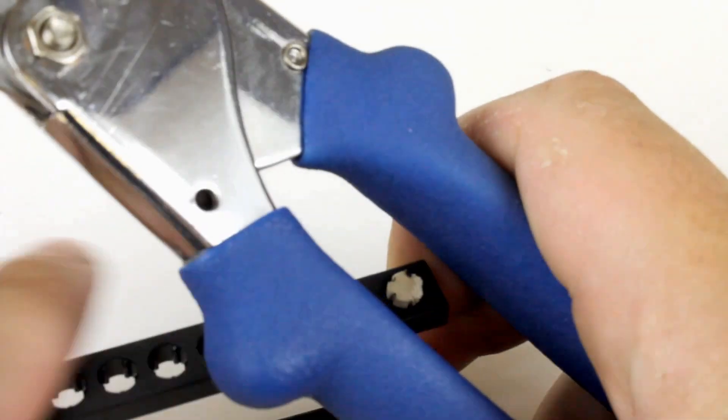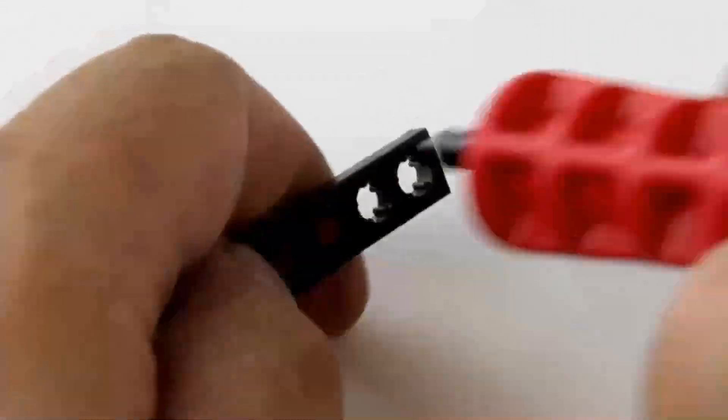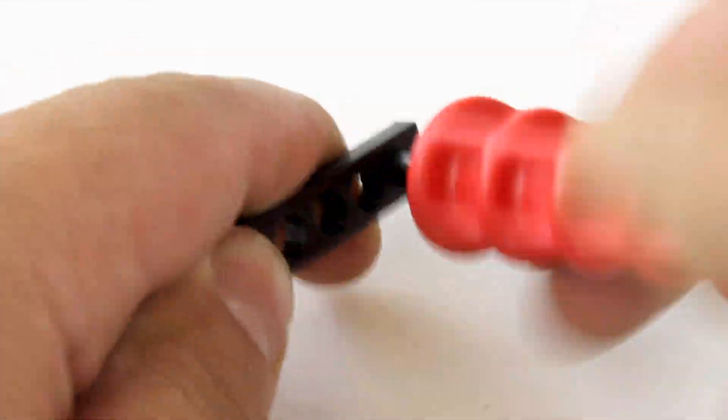Most of our TeacherGeek components come with holes that dowels just press into. Just twist the reamer back and forth to ream out a hole.